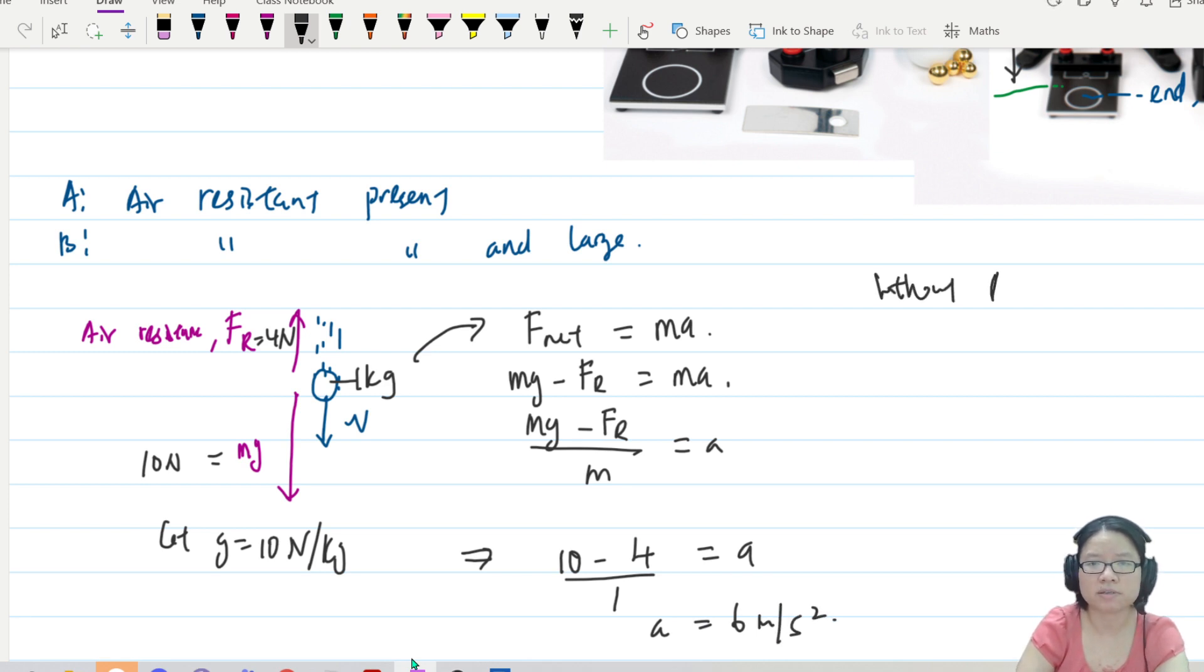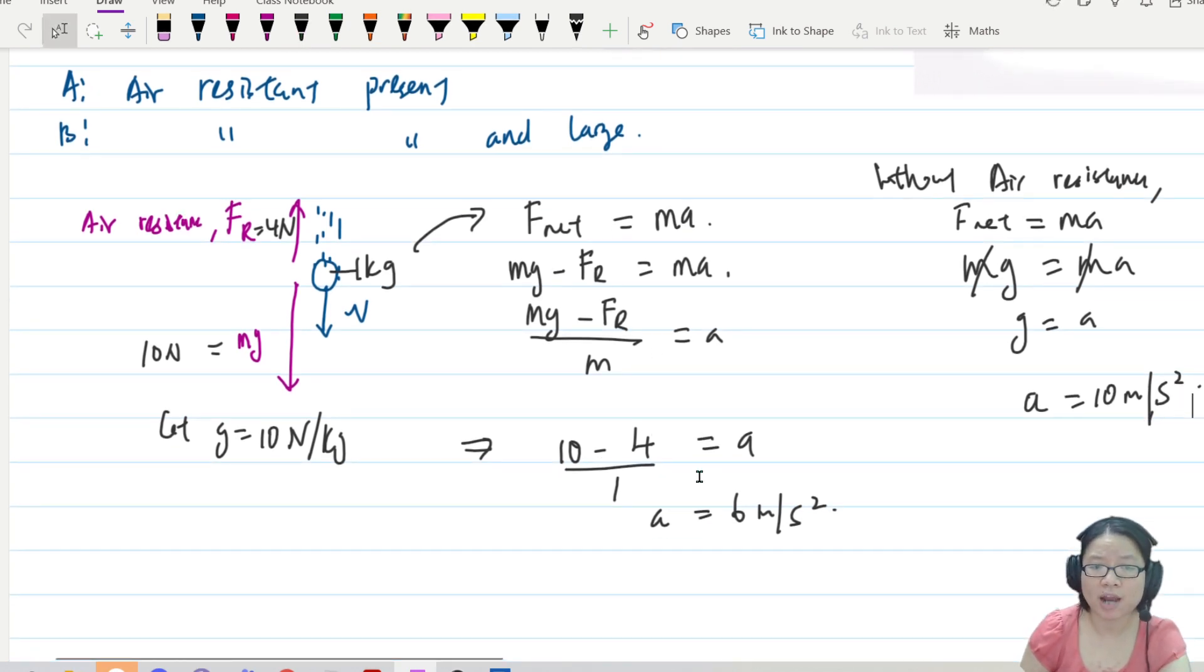Without air resistance, what is your net force? MG. Net force is MA. And the only force is MG. So M and M will cancel off. G will be equal to A. And G is equal to 10. So with air resistance, your acceleration is always less. Because air resistance will oppose a falling free fall motion.